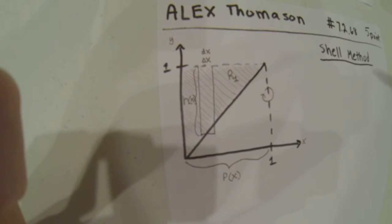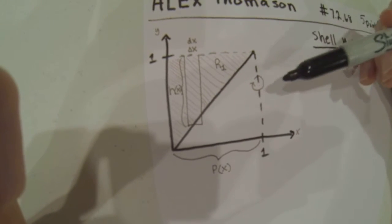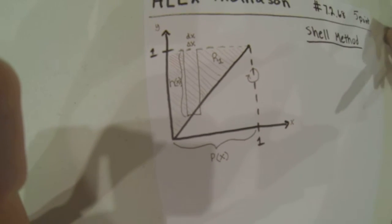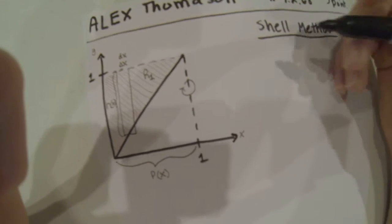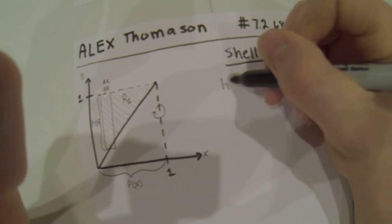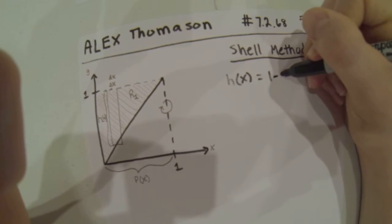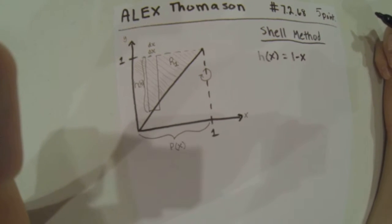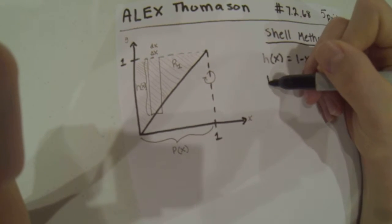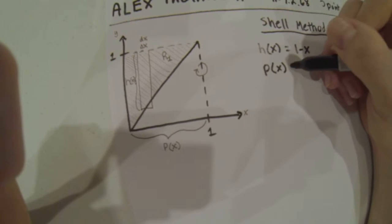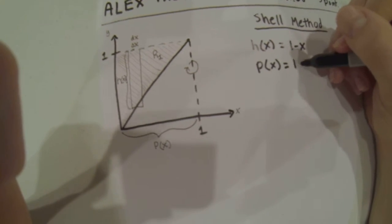We also need to find p(x), which is the distance from the axis of rotation. The height, h(x), is 1 minus x, and similarly, p(x) is also 1 minus x.